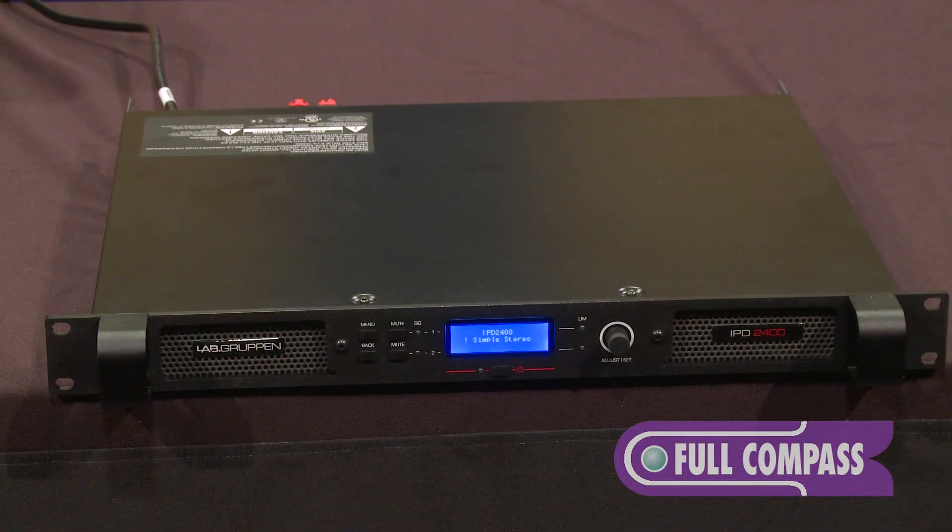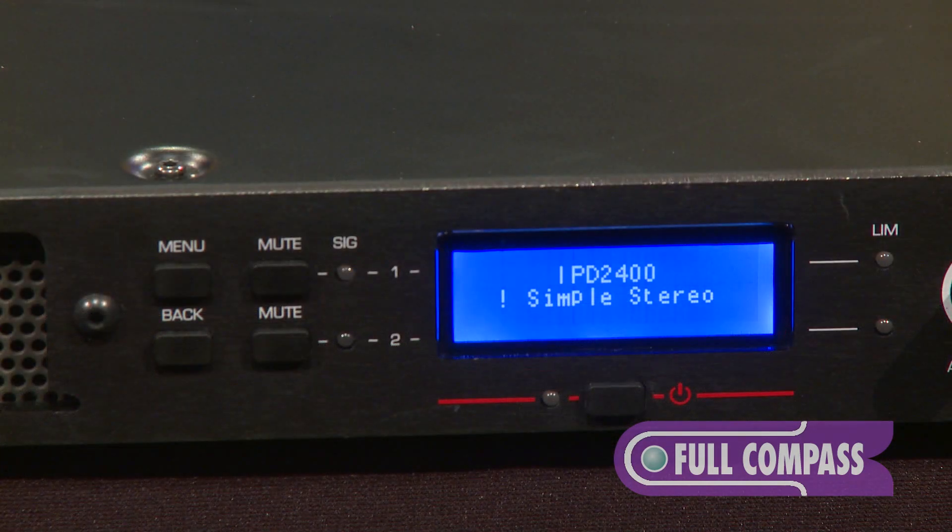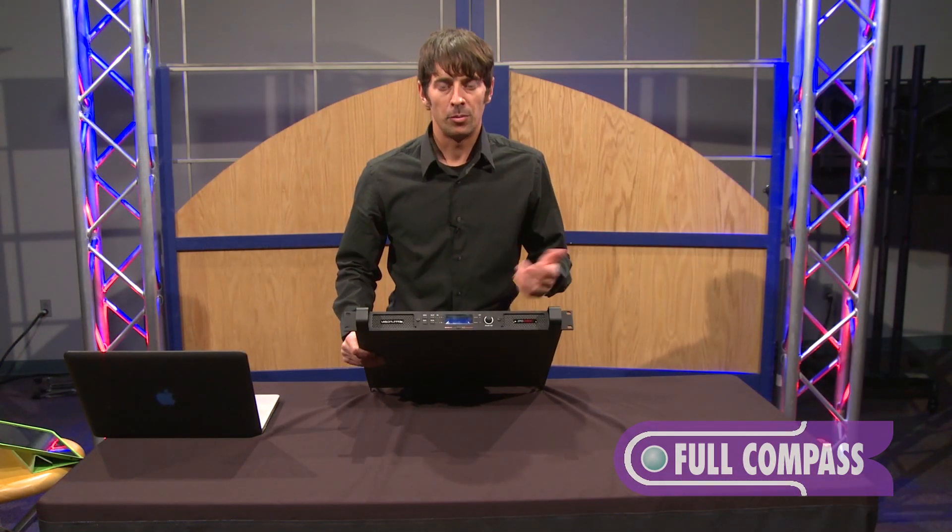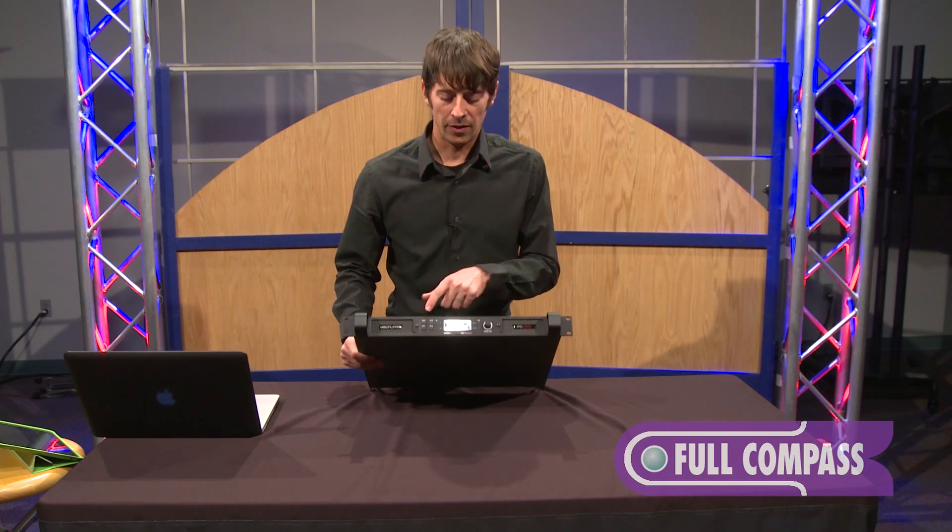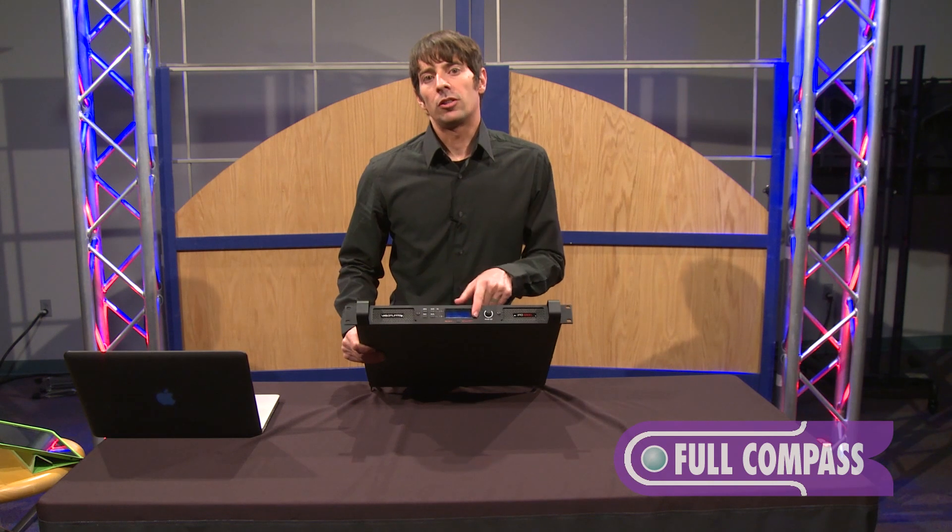Moving on to the front of the amplifier, we have the ability to completely control the amplifier from the front panel. So you are able to mute the amplifier as well as look at any sort of limiting. If you're going into limiting, you'll see the indication there. And then we have VU meters on the front. You can also lock out the front panel.